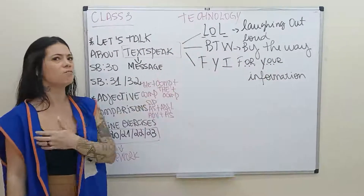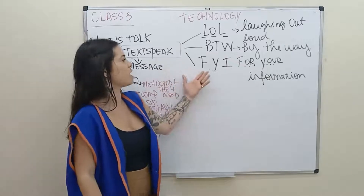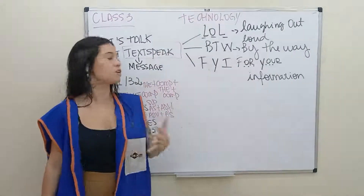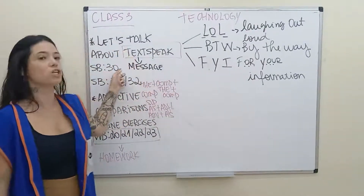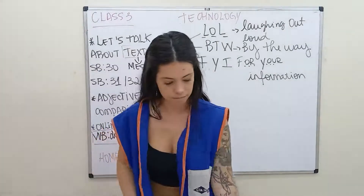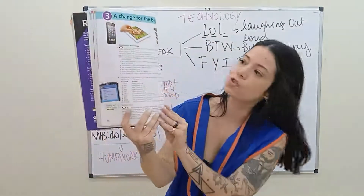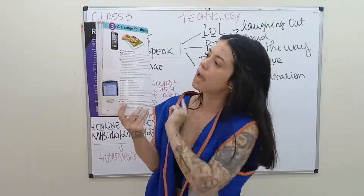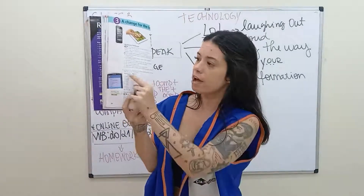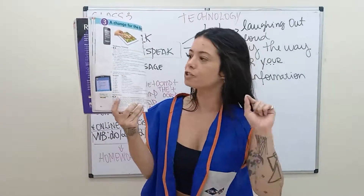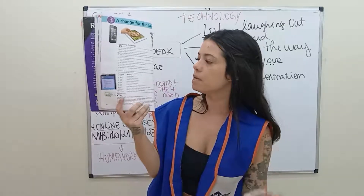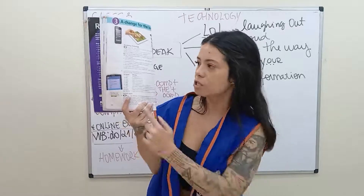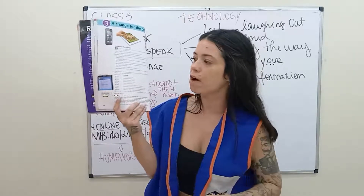So now you know what text speak is. Actually, I don't even know if I knew before this class that there was a name for those expressions. But now you do. And all these text speaks and other examples are on page 30 of your books. Take a look. This is page 30. You have a vocabulary related to technology, and then you have exercise number two, which is to underline the correct alternative to complete the meanings of the items of text speak.